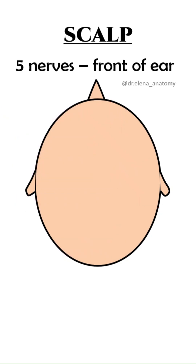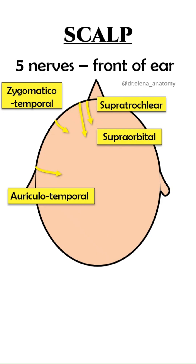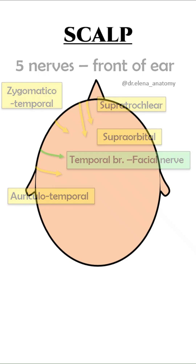It has five nerves in front of the ear: supratrochlear, supraorbital, zygomaticotemporal, auriculotemporal, and the temporal branch of the facial nerve, which is motor. The rest of the nerves are sensory.